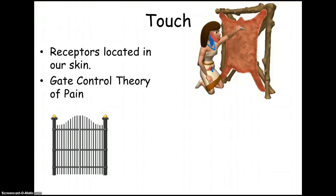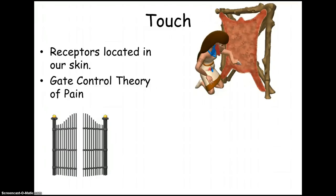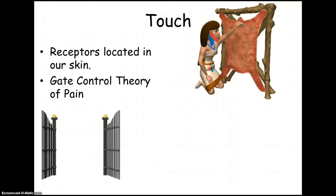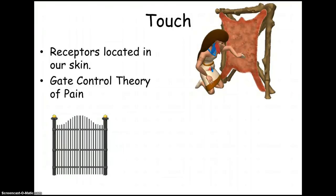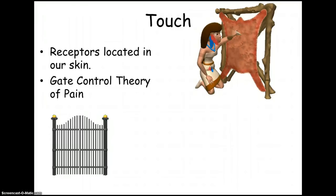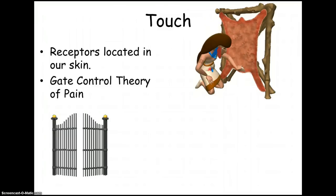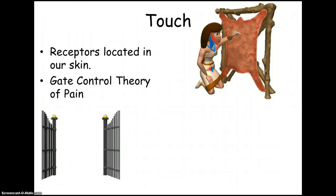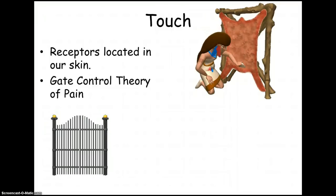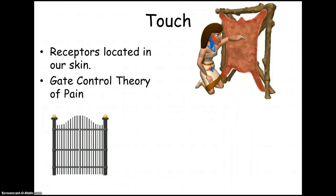So when a higher-priority message is sent, the gate swings open for that message, and then it swings shut for a low-priority message. This theory explains why if something itches — say you got a mosquito bite and you scratch it — the gate swings open for your high-intensity scratching and shuts for that low-intensity itching. That's why a scratch can make your itch go away. Thinking back to neurotransmitters from unit two, endorphins — the natural endorphins in the brain are chemically similar to opiates like morphine and control pain by swinging the gate shut.